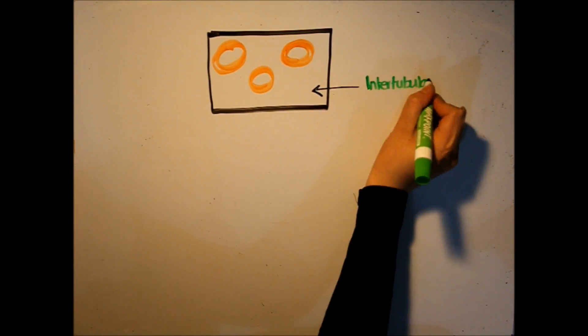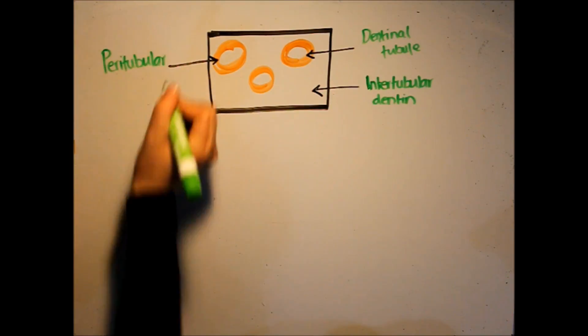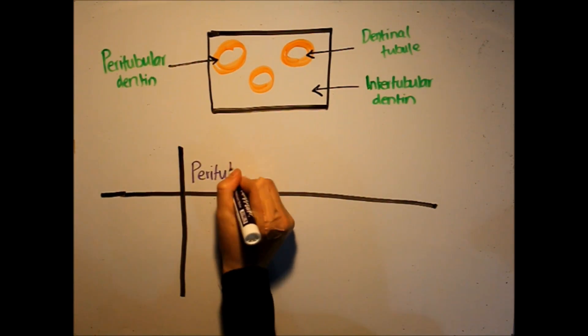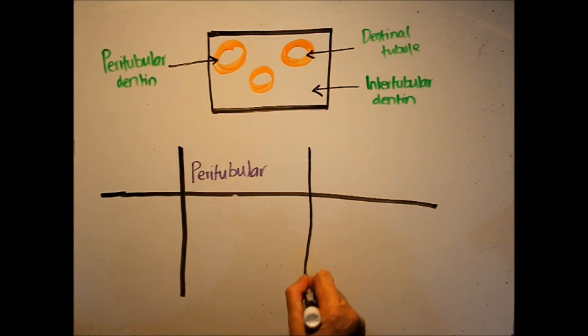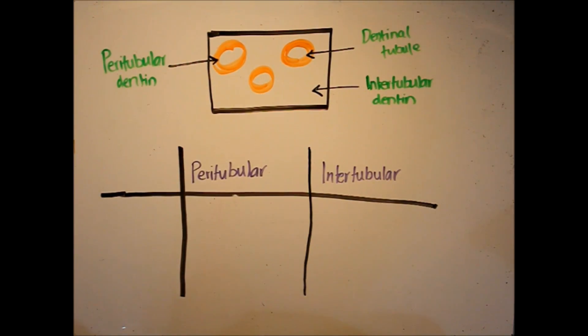Dentinal tubules are normally found in all types of dentin. They divide dentin into peritubular and intertubular portions. The difference between them is that peritubular dentin is hypermineralized, meaning it contains less collagen fibers, while intertubular dentin is composed mainly of type 1 collagen fibers that allow it to act as a scaffold for the crystal deposition in dentin.